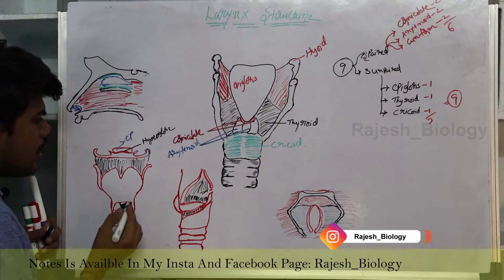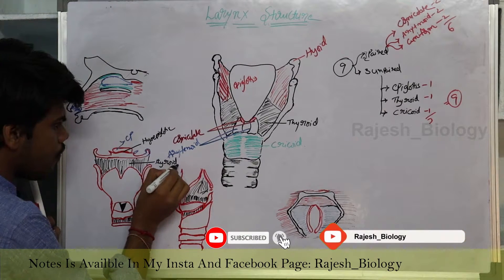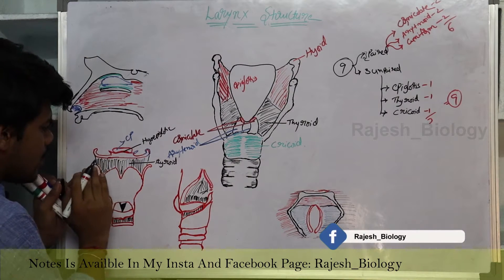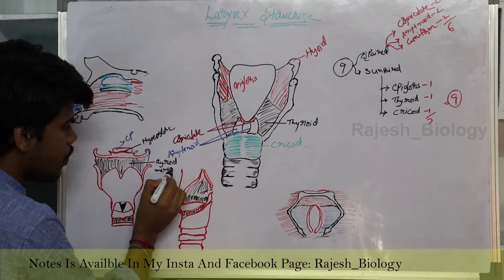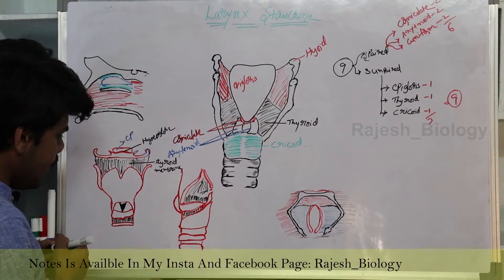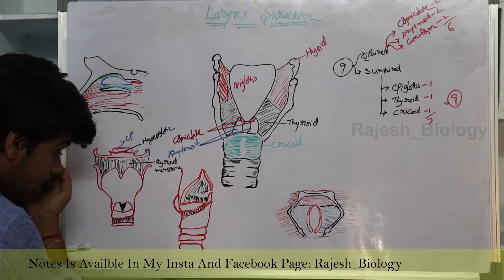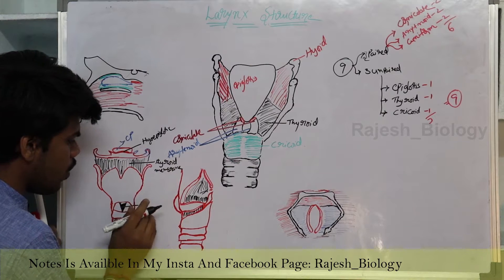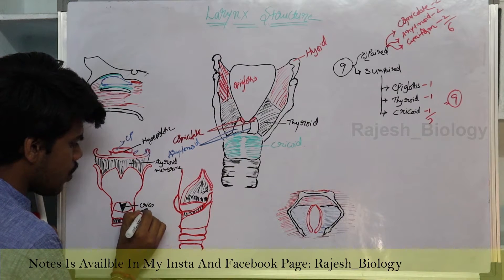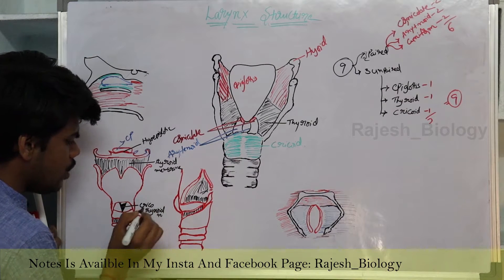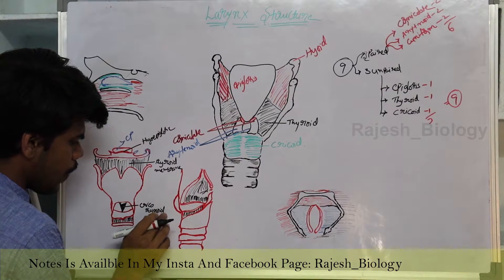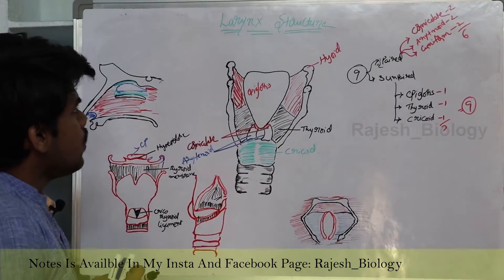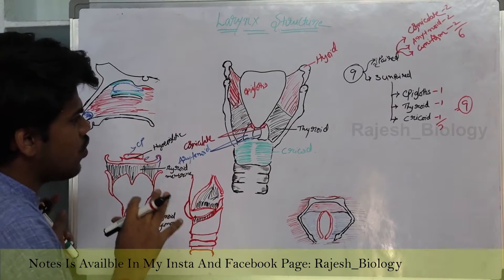That membrane between the epiglottis and the hyoid bone is known as the hyoepiglottic membrane. There is also a thyroid membrane — the membrane which surrounds and attaches to the thyroid. The membrane between the thyroid and cricoid is the cricothyroid membrane — actually it is known as the cricothyroid ligament, not a membrane. It is a ligament.